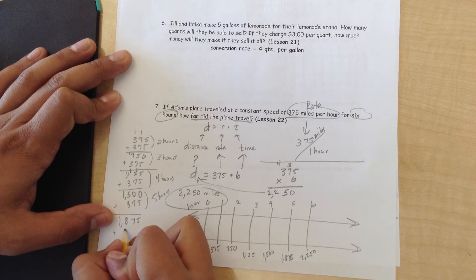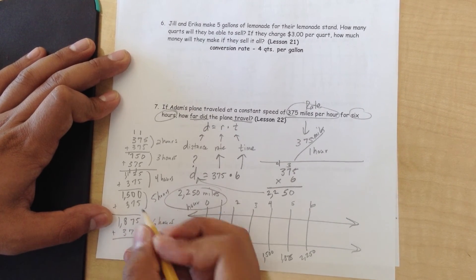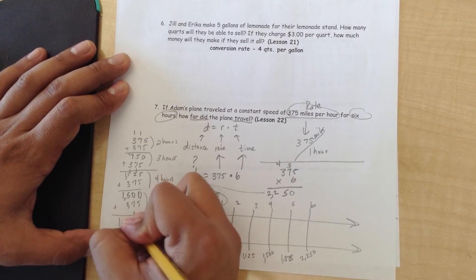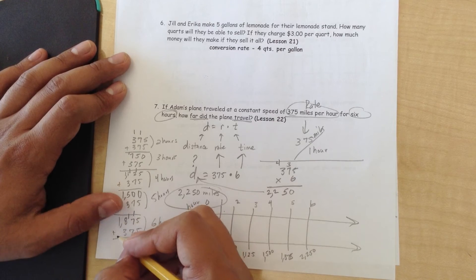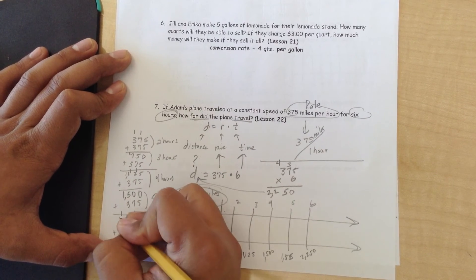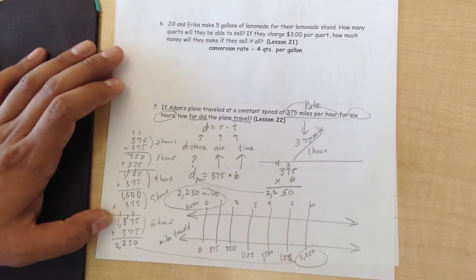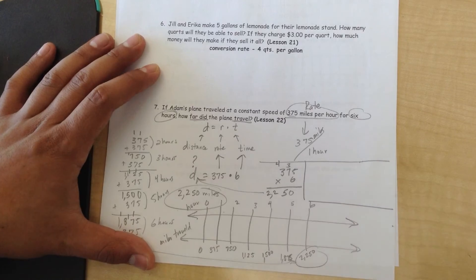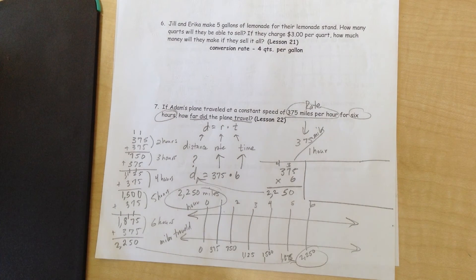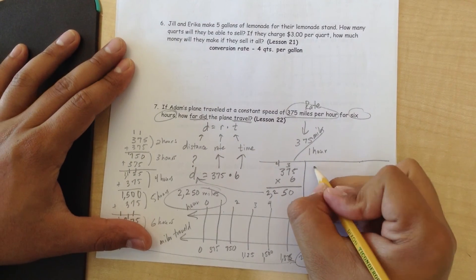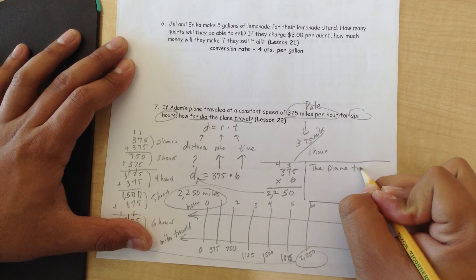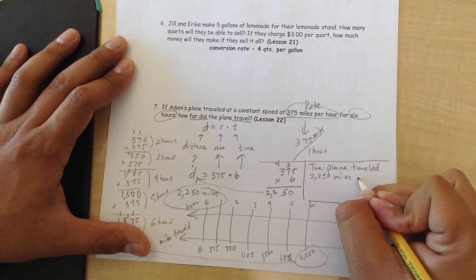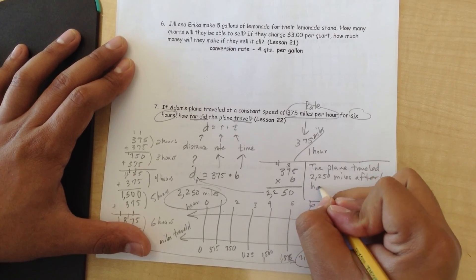Let's see if we got it right — plus 375 for 6 hours. 5 plus 5 is 10, carry the 1. 7 plus 7 is 14, plus 1 is 15, carry the 1. 1 plus 8 is 9, plus 3 is 12, put the 2 here and carry the 1. 1 plus 1 is 2. That is the answer. I'm going to create a little box here so my teacher can see the final answer. The plane traveled 2,250 miles after 6 hours.